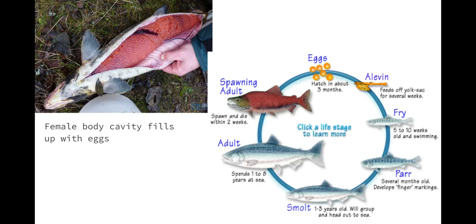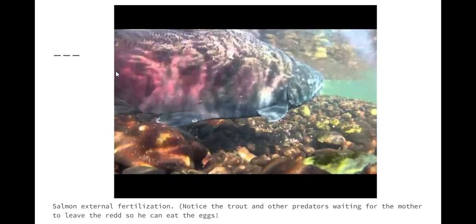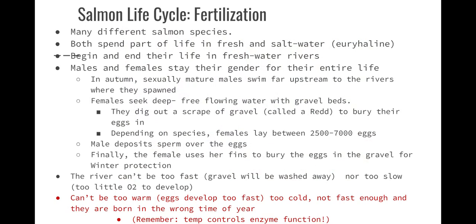Looking at our salmon — here's the life cycle. We start with our spawning adults releasing their eggs. Females need to be big because those eggs take up a lot of space; they need a body cavity that can support it and it takes a lot of energy to create those eggs. Both males and females spend part of their life in freshwater and part in saltwater, so they're euryhaline — they're osmoregulators with adaptations that help them maintain a constant salinity.